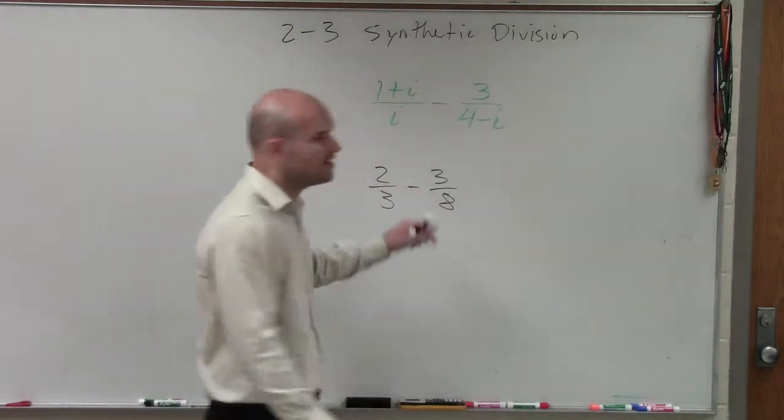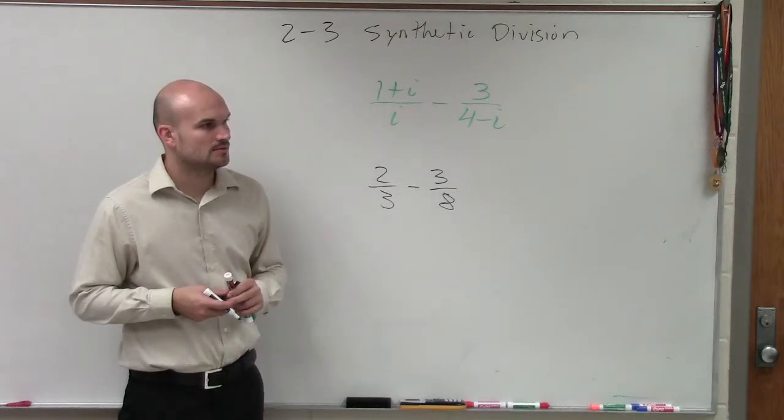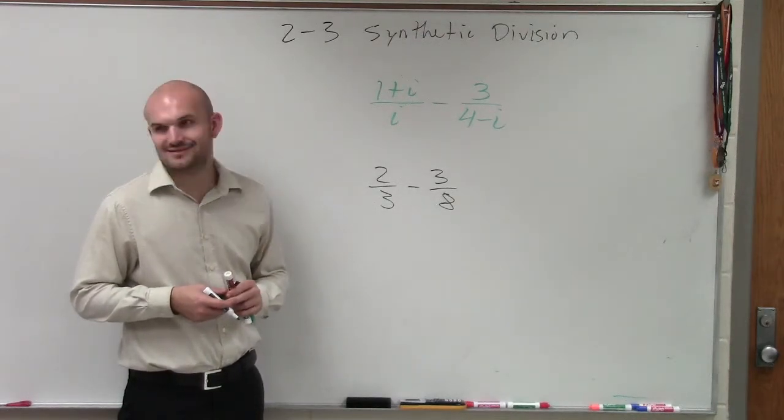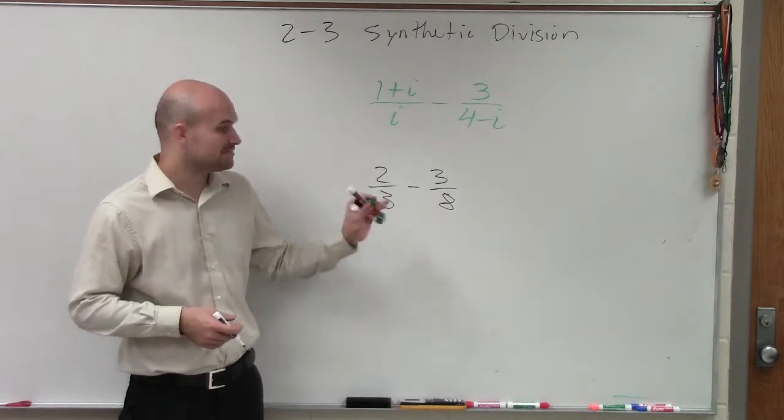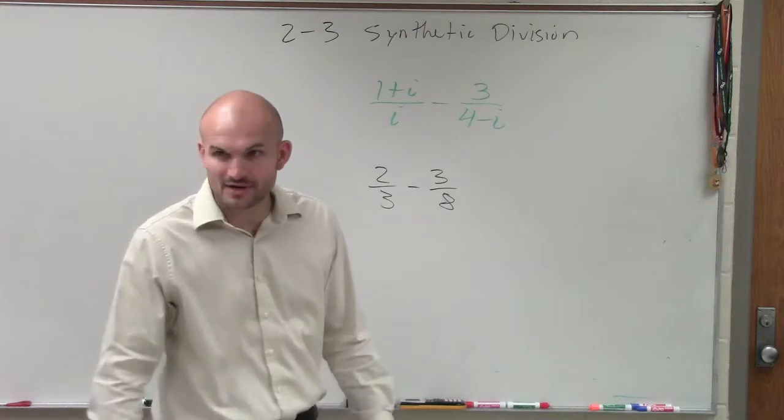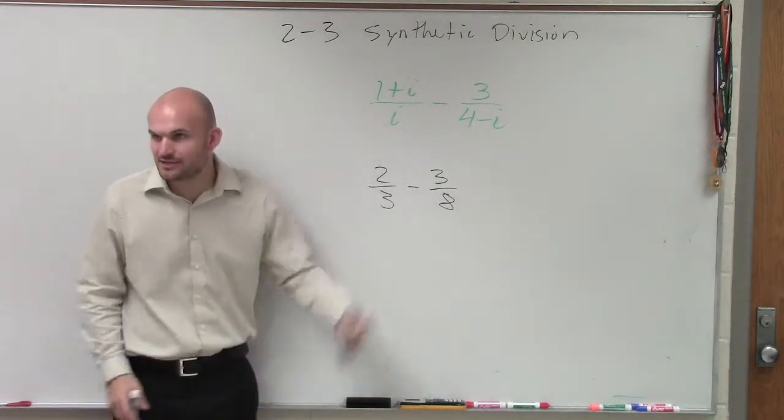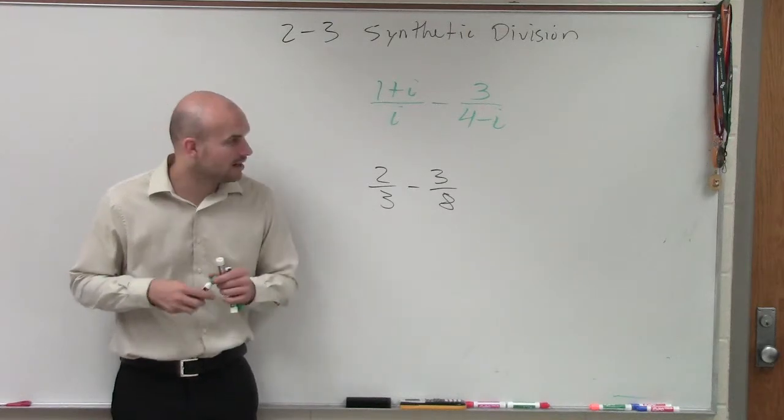If I said two-thirds minus three-eighths, what is one thing you know you have to have done to solve this? Subtracting fractions, one thing you have to have to make sure you have? Common denominators. Common denominators, right? You have to make sure your denominators are the same, or then you can't subtract or add your fractions.